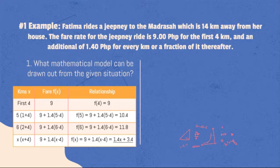For the first 4 kilometers, Fatima will have to pay 9 pesos. So, f(x), where x is 4, is equal to 9. Let's say the total distance is 5 kilometers. What is the total fare amount then? It will be 9 plus 1.4 multiplied by the excess distance, which is total distance minus the first 4 kilometers. Total fare is 10.4 pesos.